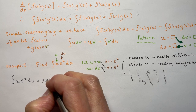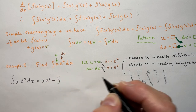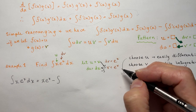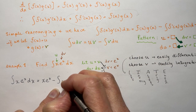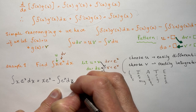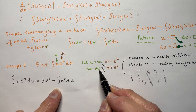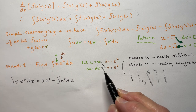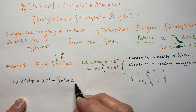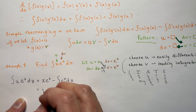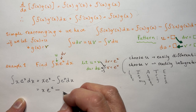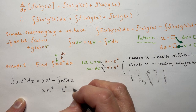So x·e^x minus the integral — there should be a dx in here — so I go e^x and then dx. The dx, you have to make sure you have it here. So now I'm just going to take the integral of this part. So I have x·e^x minus — what's the integral of e^x?